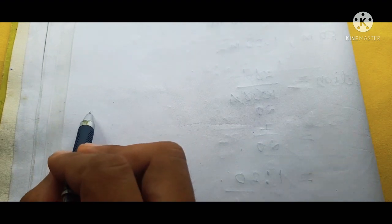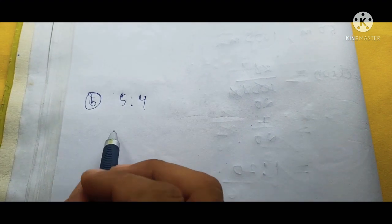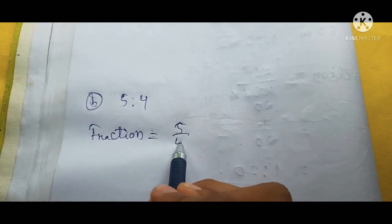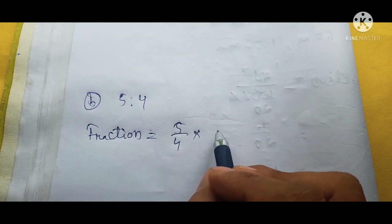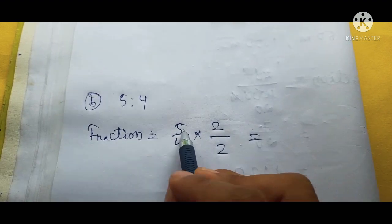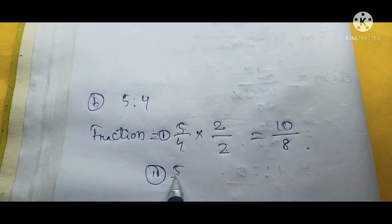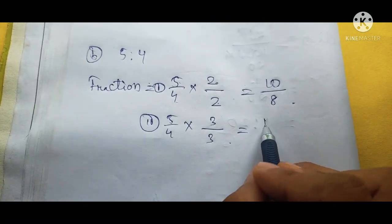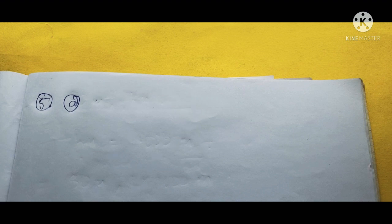Now question 4B: find two equivalent ratios of 5 is to 4. We make it into a fraction: 5 by 4. Multiplying both by 2: numerator 5×2 = 10, denominator 4×2 = 8. That gives 10 is to 8. Then multiplying by 3: 5×3 = 15, 4×3 = 12. That gives 15 is to 12. These are the two equivalent ratios.